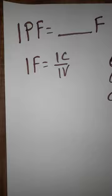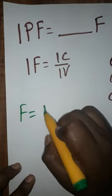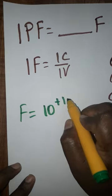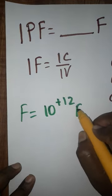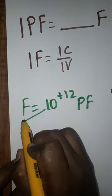Now, one picofarad is equal to how many farads? So one farad is how many picofarads? It is 10 power plus 12 picofarads. Now we want to convert picofarad to farad, so you can bring this as a denominator: 1 divided by 10 power plus 12 farads is equal to 1 picofarad.